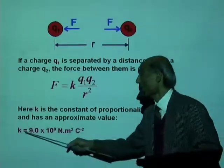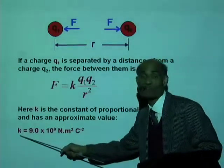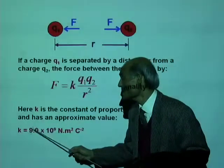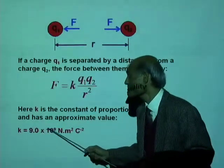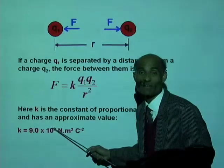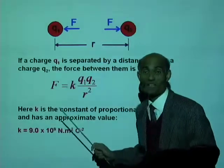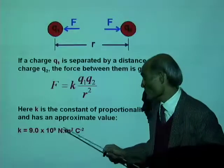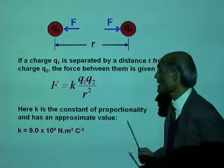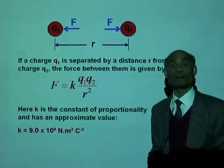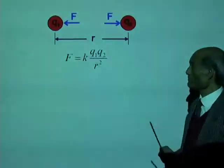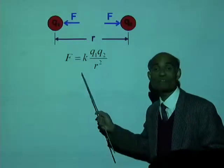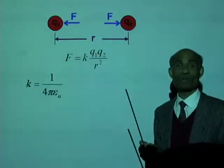The value of K is 9 times 10 to the power of 9 Newton meter squared per Coulomb squared. That is a very easy number to remember. That is the mathematical statement of Coulomb's Law.